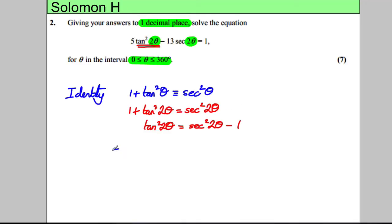So, let's do that. So, we'd have 5, and instead of tan squared 2 theta, I'm going to write sec squared 2 theta, take away 1, subtract 13 sec 2 theta, is equal to 1. So, that will be 5 sec squared 2 theta, subtract 5, subtract 13 sec 2 theta. And, I'm actually going to take the 1 off here, take 1, is equal to 0.